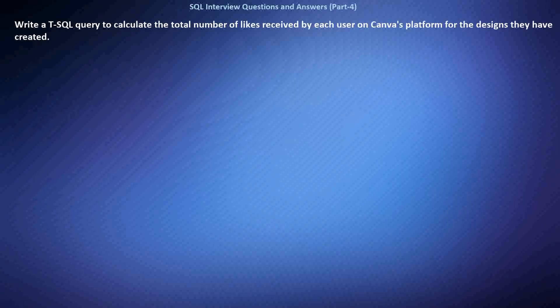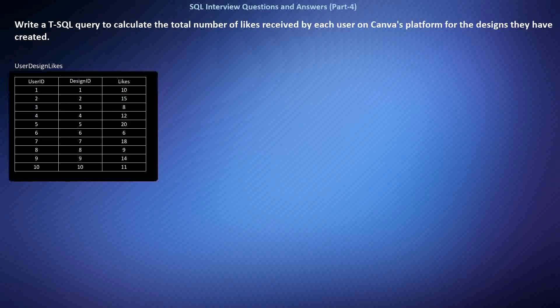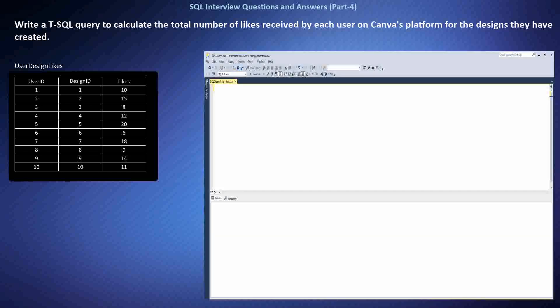Write a SQL query to calculate the total number of likes received by each user on Canva's platform for the designs they have created. We want to analyze user engagement by calculating total likes received for created designs, querying from a table that records user IDs and corresponding likes for each design. This SQL query groups data in the UserDesignLikes table by user ID and calculates the SUM of likes received for each user's designs.